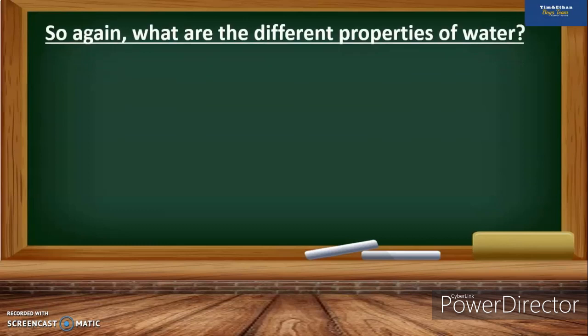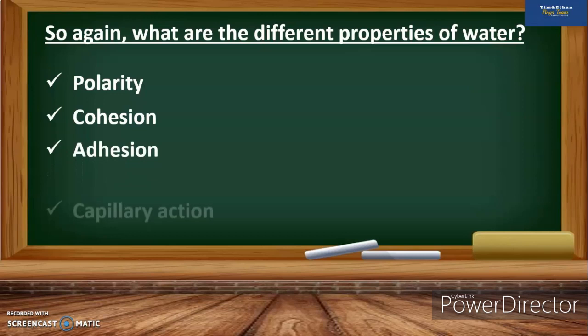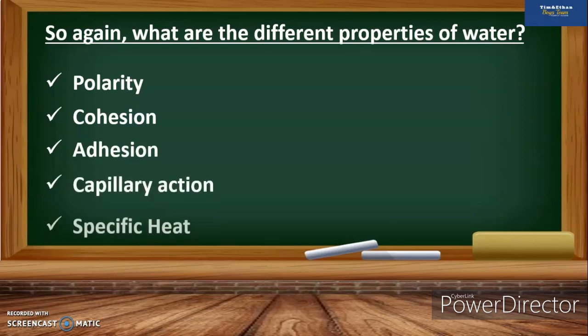To summarize, the different properties of water are: polarity, cohesion, adhesion, capillary action, the ability to dissolve many substances (universal solvent), and high specific heat. I hope you understood the lesson for today. Thank you and goodbye.